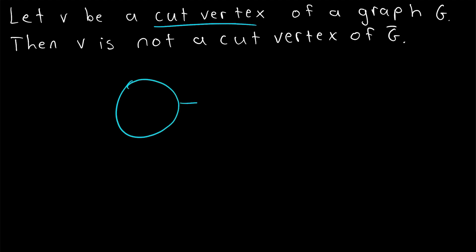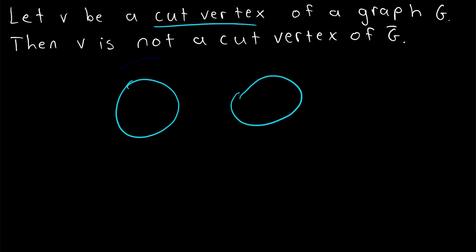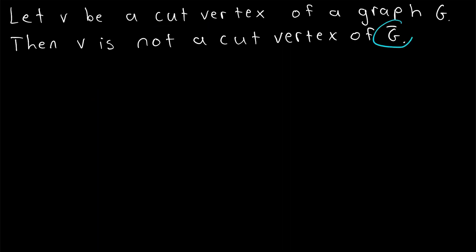Remember that a cut vertex of a graph is a vertex that, when deleted, disconnects the graph or disconnects the component it belongs to. The complement of a graph G has the same vertices as G and the opposite edges. I'll leave links in the description to lessons on both cut vertices and complement graphs if you need a quick refresher.